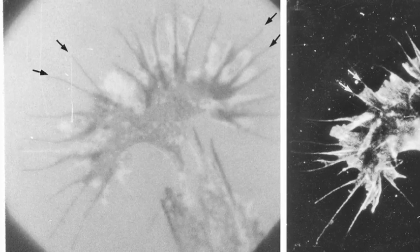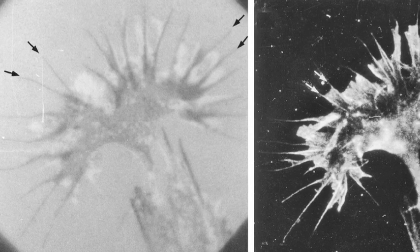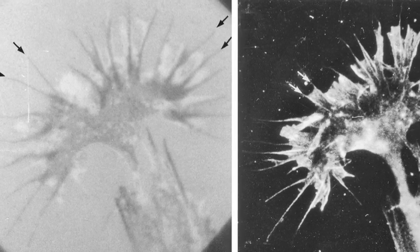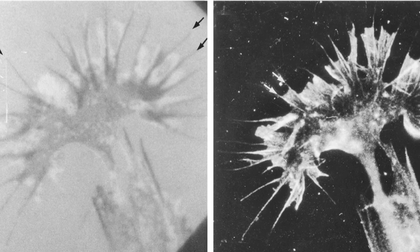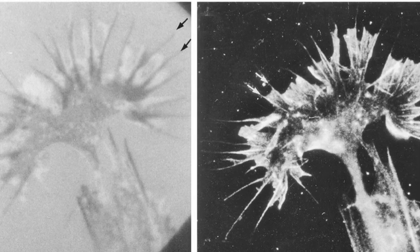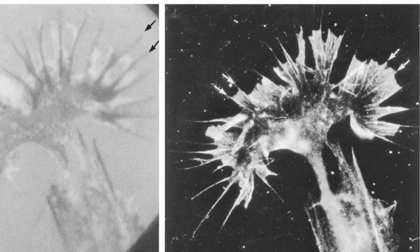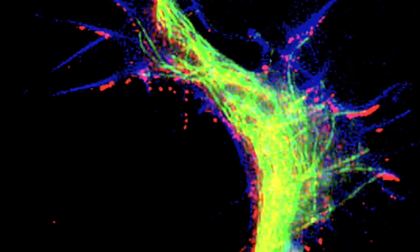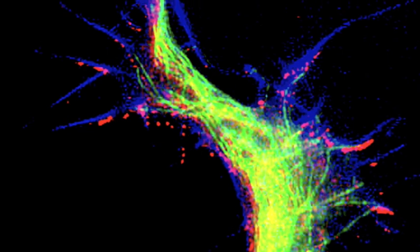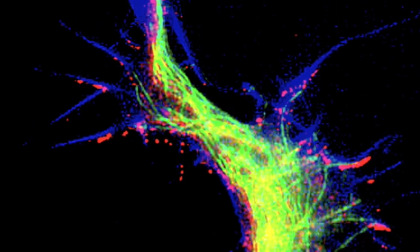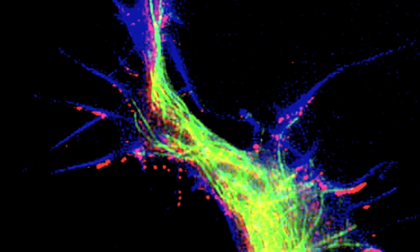In addition to these cytoskeletal dynamics, a growth cone must adhere to its substrate in order to advance. In the left image, adhesion sites are black, while in the right image, corresponding actin filament bundles are white. Microtubules in green at the growth cone front do not advance beyond the adhesion sites, in red, that are made by the extending growth cone margin, in blue.